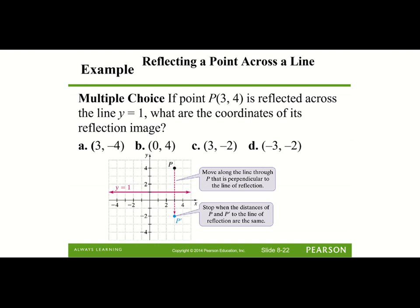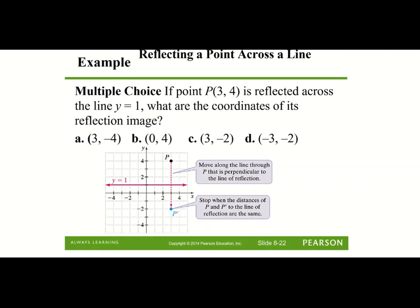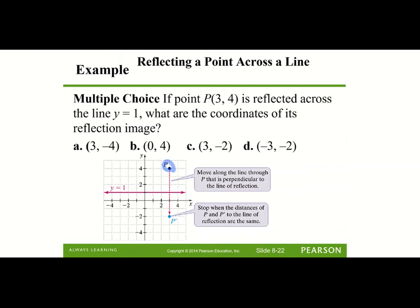Here we have point P with coordinates (3, 4), and it's reflected across y = 1. Going from the line y = 1 up to P is three spaces, so P prime will be directly below y = 1 by three spaces. Counting down three from y = 1 gives us the coordinates of P prime as (3, −2), which is answer choice C.